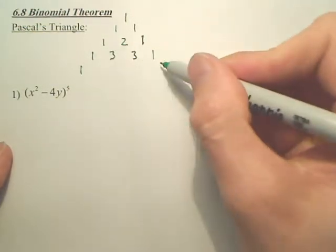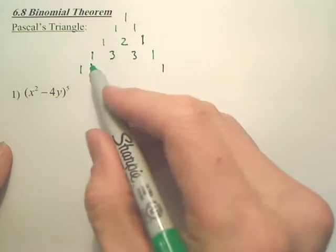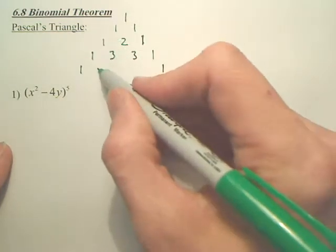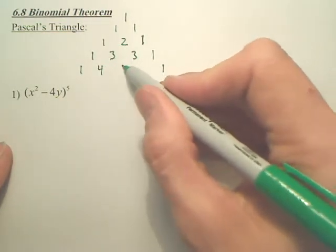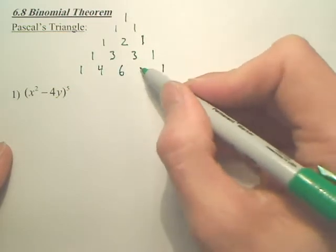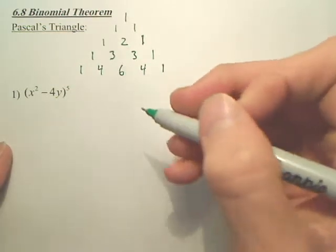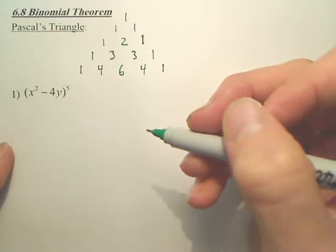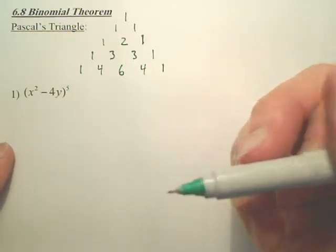You still put 1's on the side. 1 plus 3 is 4. 3 plus 3 is 6. 3 plus 1 is 4. You keep the pattern going, you get Pascal's triangle.